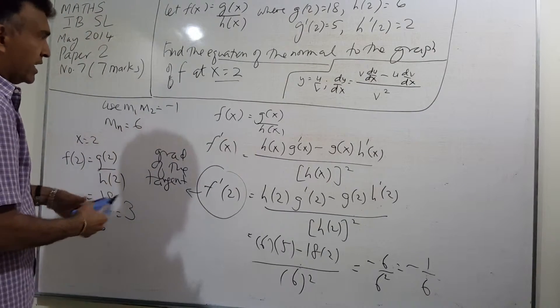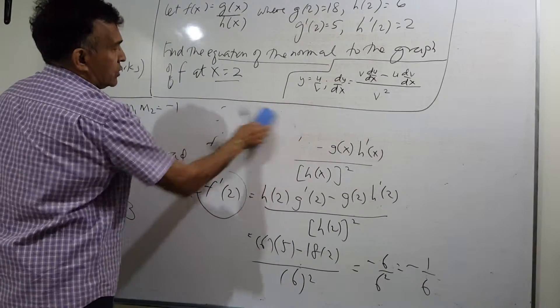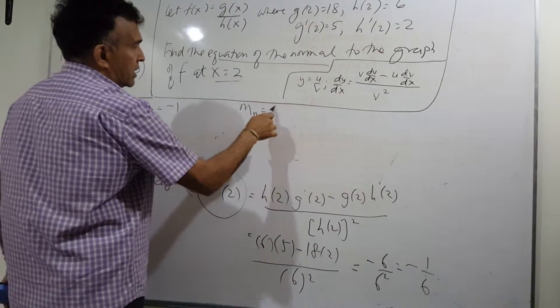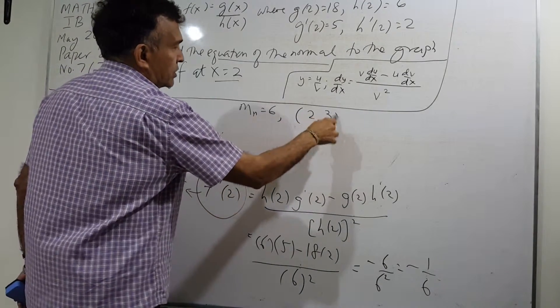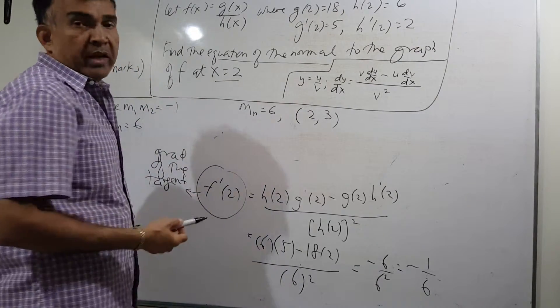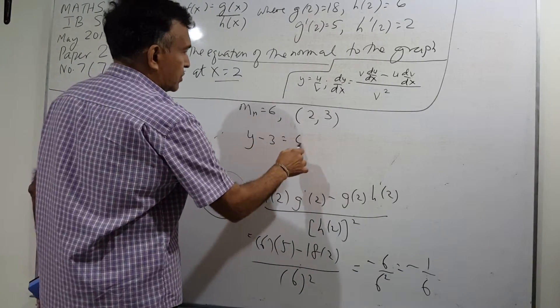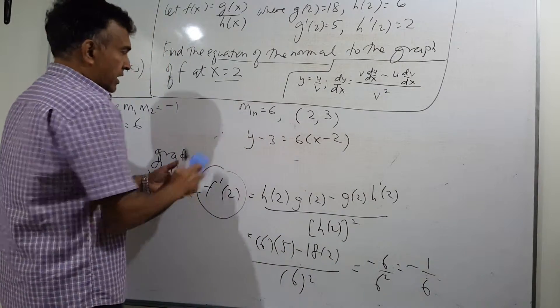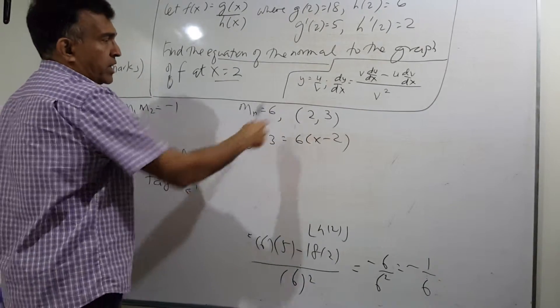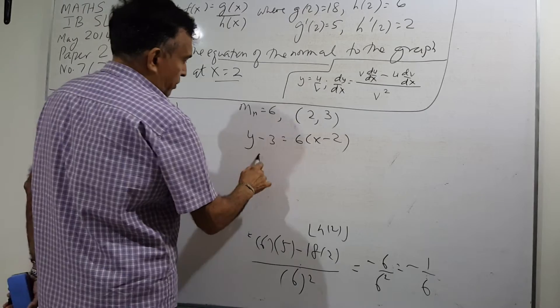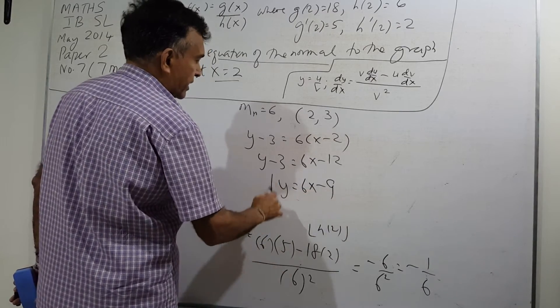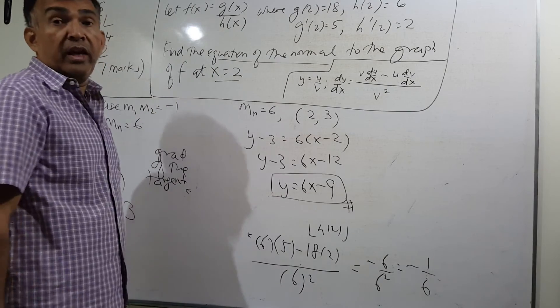To summarize, the gradient of the normal is 6 and the point is 2, 3. So using y minus y1 equals m x minus x1, we can write y minus 3 equals 6 x minus 2. So y minus 3 equals 6x minus 12. Then y equals 6x minus 9. This is the equation of the normal and we are done.